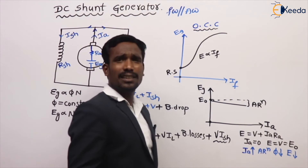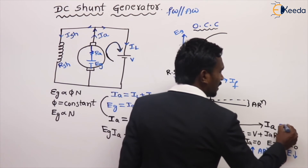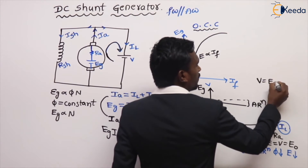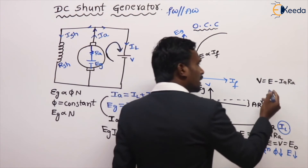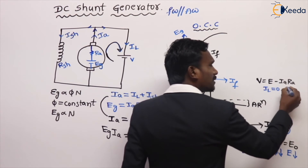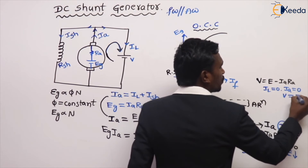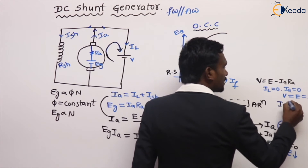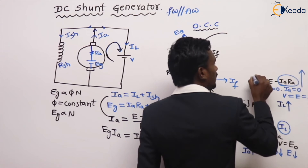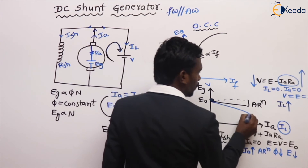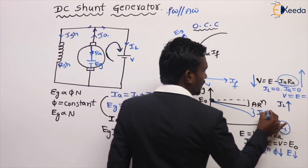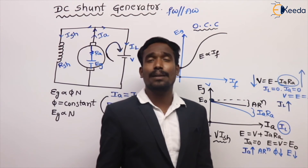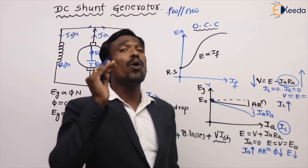External characteristics are drawn between terminal voltage V and load current IL. When IA is zero (no load), V equals E, the no-load voltage. When IL increases, the IA×RA drop increases, and so the load voltage reduces. This drop in external characteristics represents the ohmic drop. The internal characteristic represents armature reaction drop; the external characteristic represents ohmic drop.